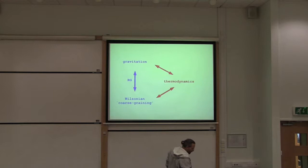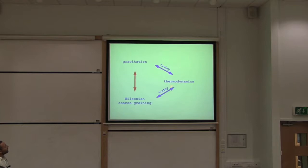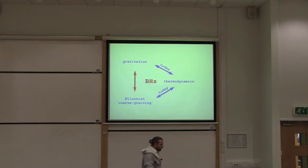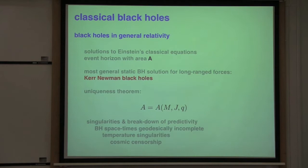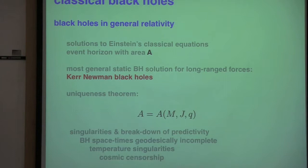What I would like to deal with today is to discuss applying these ideas to the physics of black holes. To start with, I will review a few very well-known features of classical black holes. Classical black holes are specific solutions to Einstein's theory of general relativity.